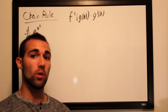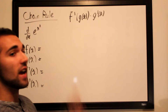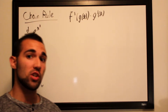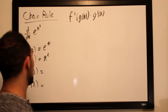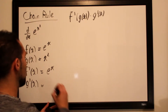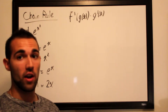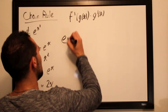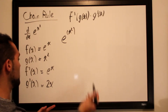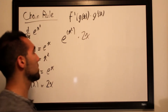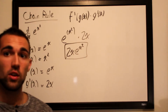We know e^x is easily differentiable — its derivative is always e^x — and we know how to differentiate x². So f(x) = e^x, g(x) = x², f'(x) = e^x, and g'(x) = 2x. Plugging g(x) wherever we see x in f', we get e^(x²), then multiply by g'(x) = 2x. Our final answer is 2x·e^(x²).